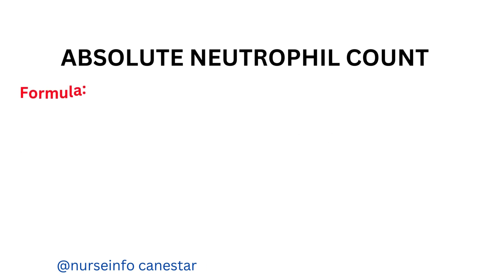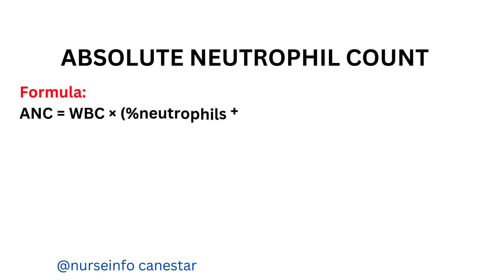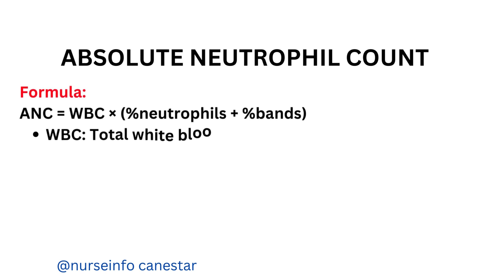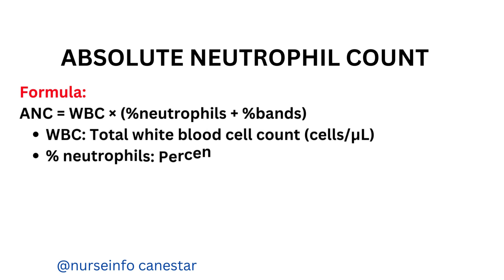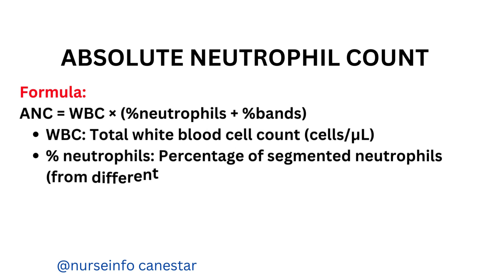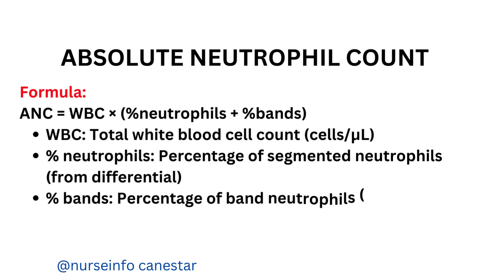Formula: ANC equals WBC times (percent neutrophils plus percent bands). WBC is the total white blood cell count in cells per microliter. Percent neutrophils is the percentage of segmented neutrophils from the differential. Percent bands is the percentage of band neutrophils from the differential.